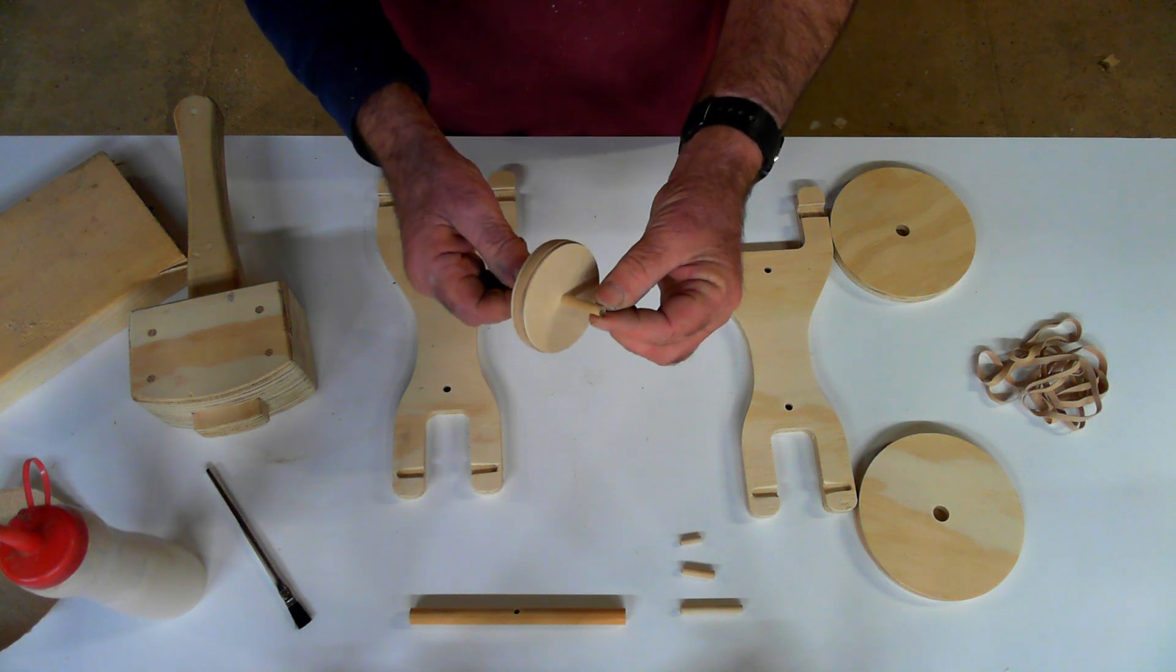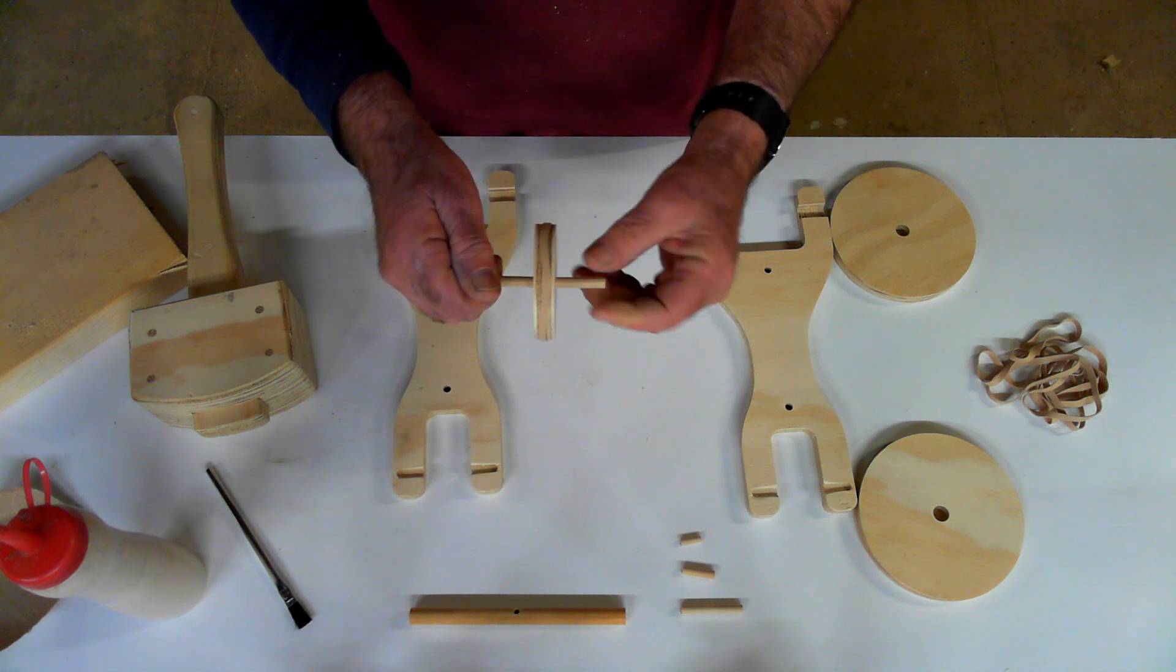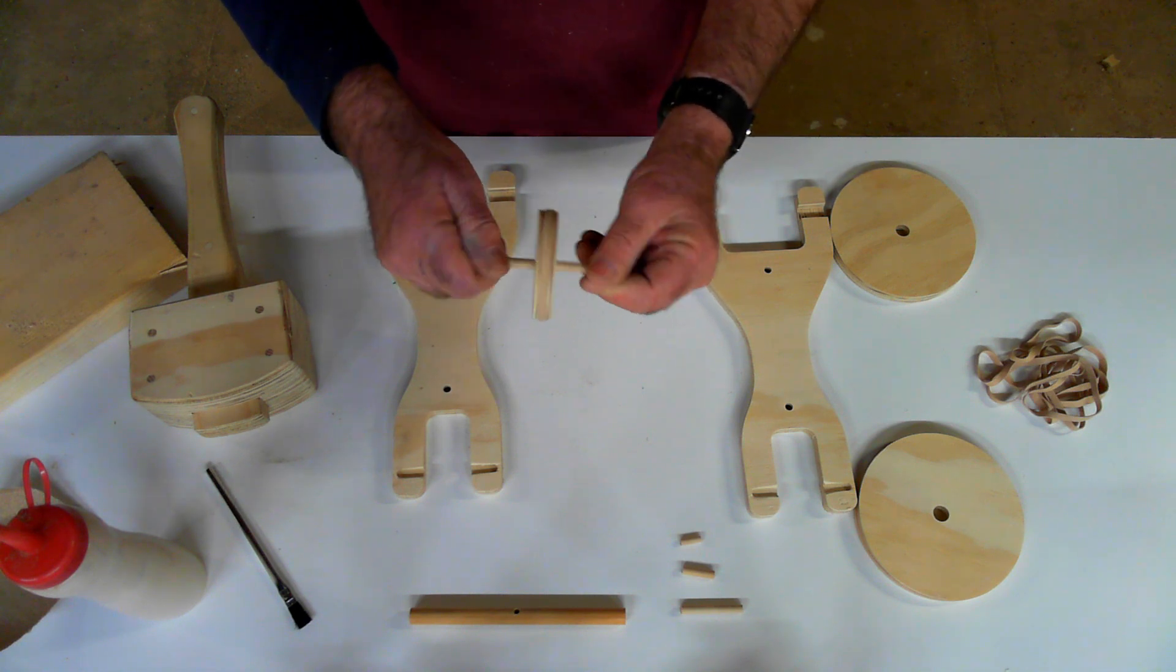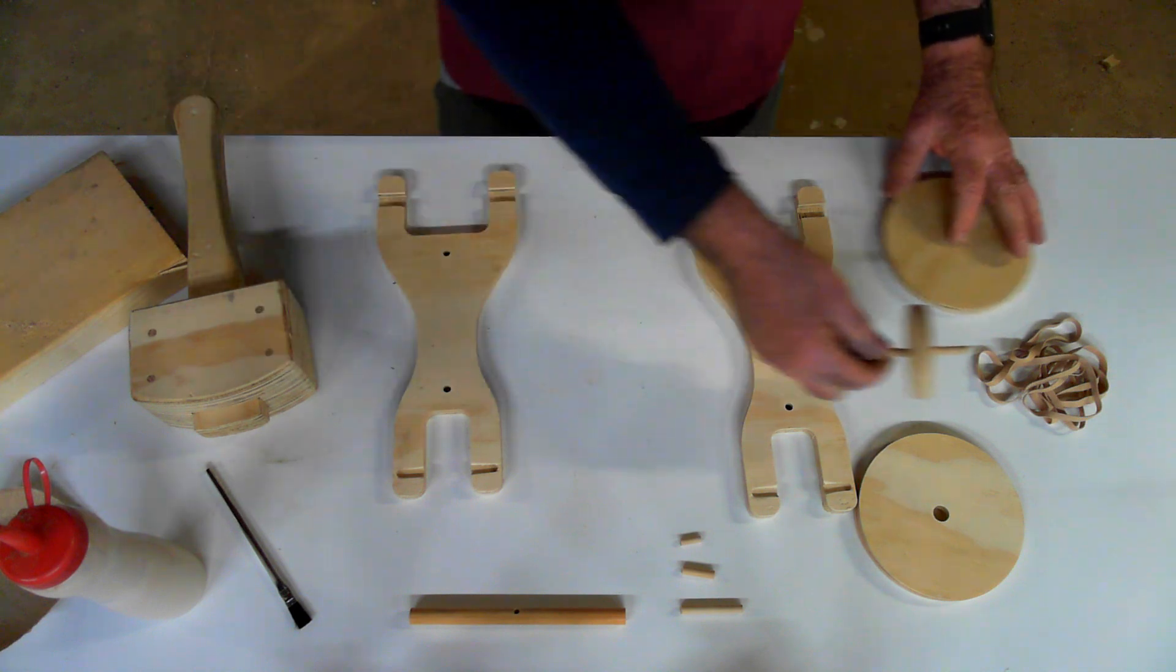And if you get any little bit of fuzz on the ends of the axles from cutting it off, just kind of hit them with a little bit of sandpaper. So we'll set that aside.